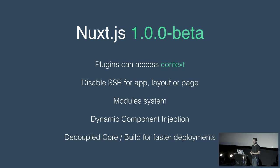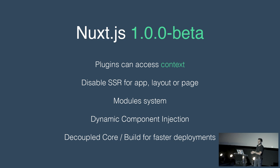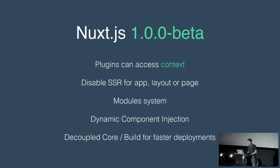We've talked a lot about the 1.0 release, which we pushed back a little to make sure it was ready, including PWA support. For the 1.0, plugins can have access to context — that was the main feature people were asking for, to have access to the request and more options. You're also able to disable server-side rendering for the whole application, a specific layout, or just a specific page. So you can create a single-page application with Nuxt without the difficulties of server-side rendering, or disable it just for a back-office layout. We also have the module system and dynamic component injection — you can inject components with dynamic imports — and we're already ready to work with Vue 2.4.